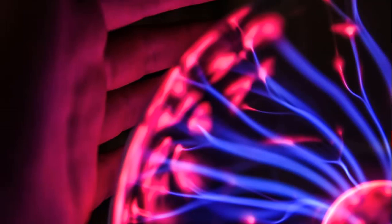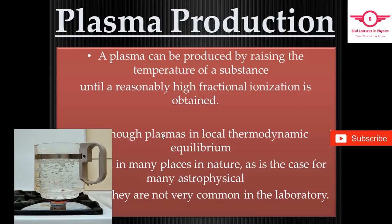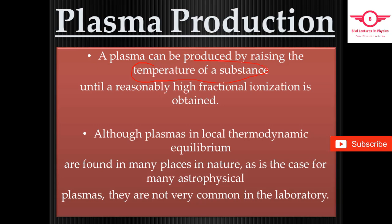Assalamualaikum warahmatullahi wabarakatuh. In this video I am going to discuss about how we can produce plasma in the laboratory. A plasma can be produced by raising the temperature of a substance. If we have a substance and we increase the temperature, then we have plasma.